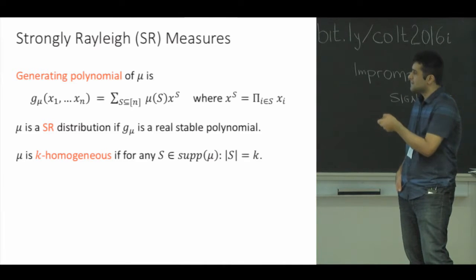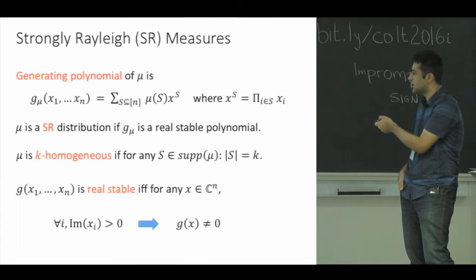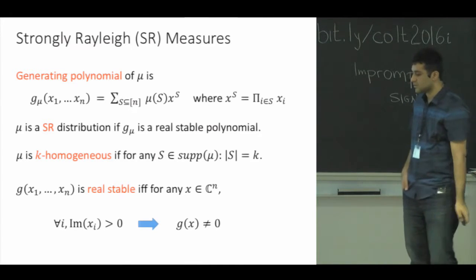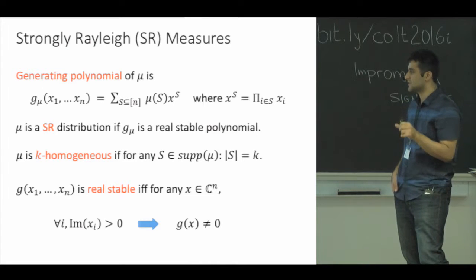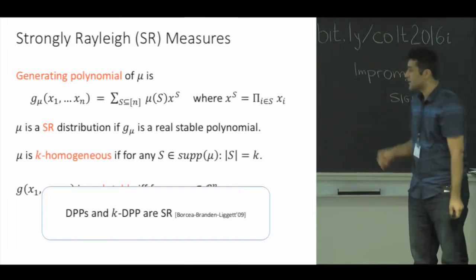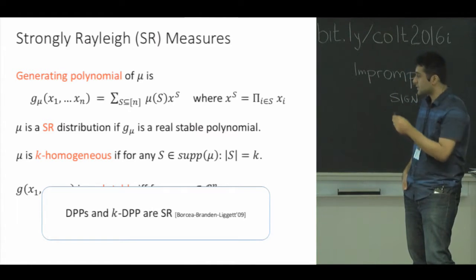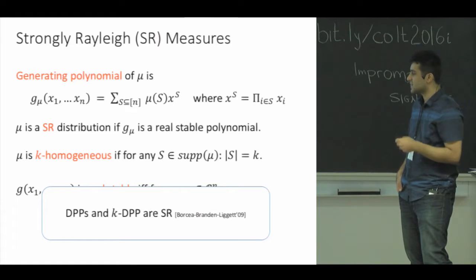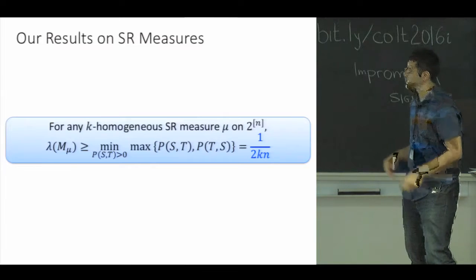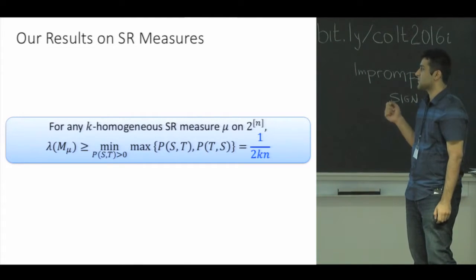The definition of this property, this real stability property, is not important for this talk, but it basically says that the polynomial has no roots with all coordinates having positive imaginary parts. What is important is that DPPs and k-DPPs are special cases of SR measures, and in particular, k-DPPs are special cases of k-homogeneous SR measures.